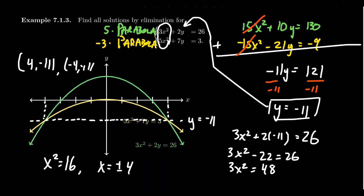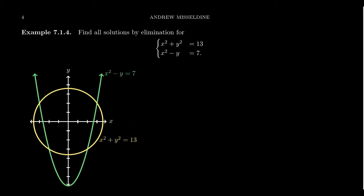So we're able to solve this system of equations using elimination. Let's do another example. Here we have x² + y² = 13 — that's a circle centered at the origin with radius √13. The other equation, x² - y = 7, is a parabola.